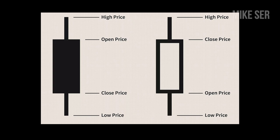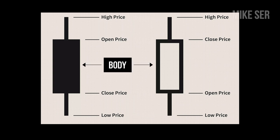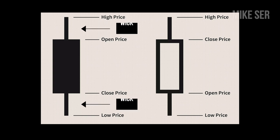The candlestick has a part called the body, which represents the price range between the open and close of that day's trading. In addition, there's a line found on a candle called a shadow or a wick, and this illustrates the highest and lowest prices.